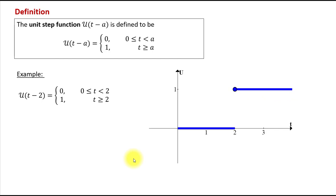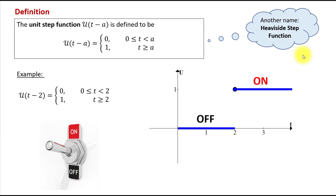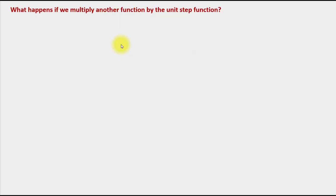Because of the nature of this function, it's very common to think of it as an on and off switch. When the value of the function is 0 we say it's off, and when the value becomes 1 it's on. In a moment we're going to see that when the unit step function is multiplied with another function, we can say it turns on or off that other function. The unit step function is also called the Heaviside step function, named after English mathematician Oliver Heaviside.